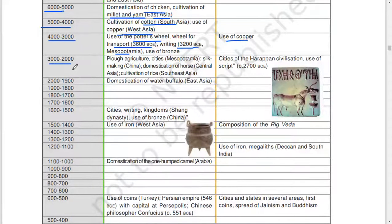3,000 to 2,000: plough agriculture, cities, Mesopotamia. Silk making, China. Domestication of horse, Central Asia. Cultivation of rice, Southeast Asia. Cities of Harappan civilization, use of script, 2,700 BCE.